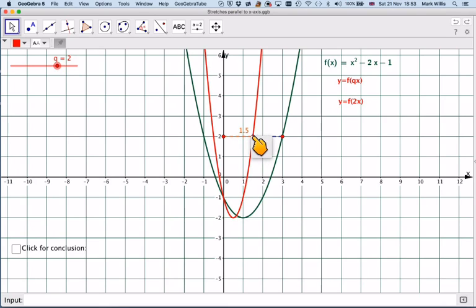Originally it was 3, now it is 1.5, but the number here is 2. So this is a stretch parallel to the x-axis, but instead of the stretch factor being 2, it's going to be 1 over 2, which is a half.